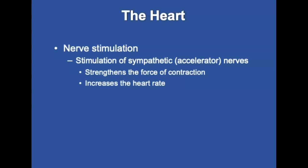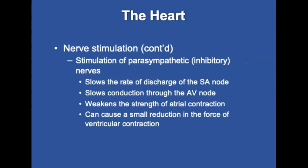Next we're going to talk about nerve stimulation. Stimulation of the sympathetic nerves strengthens the force of contraction and increases the heart rate. Stimulation of the parasympathetic nerves slows the rate of discharge of the SA node, slows conduction through the atrioventricular node, weakens the strength of atrial contraction, and can cause a small reduction in the force of ventricular contraction.